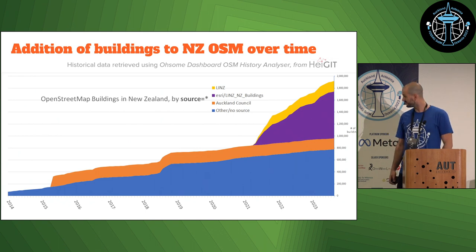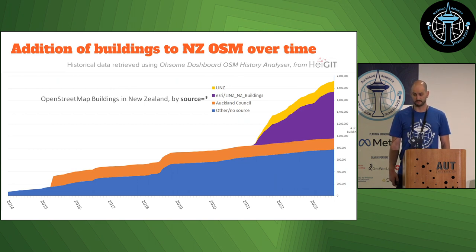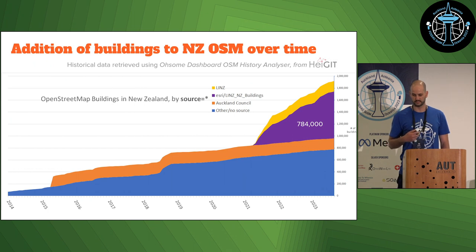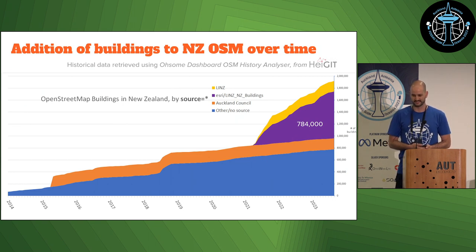In 2014–2015, there was an import of Auckland Council buildings — that's the orange band. Then in 2021, when this data became available in Rapid, that's when the purple band started ramping up. That represents 784,000 buildings added in the last two years. The yellow band at the top is also the same LINZ building outlines, but that was an undocumented import someone went ahead and did. At least they put the source tag in so we can detect it — but it was undocumented, I'll say no more about that.